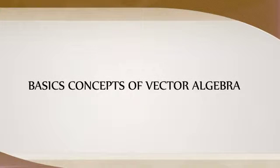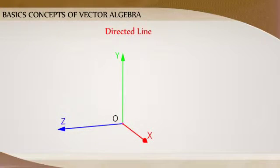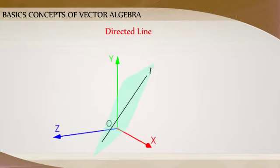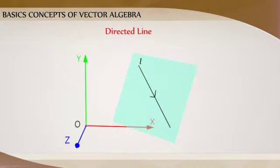Vector Algebra: Some basic concepts. Directed Line - A line L in a plane or three-dimensional space can give two directions by means of arrowheads. A line with one of these directions prescribed is called a directed line.